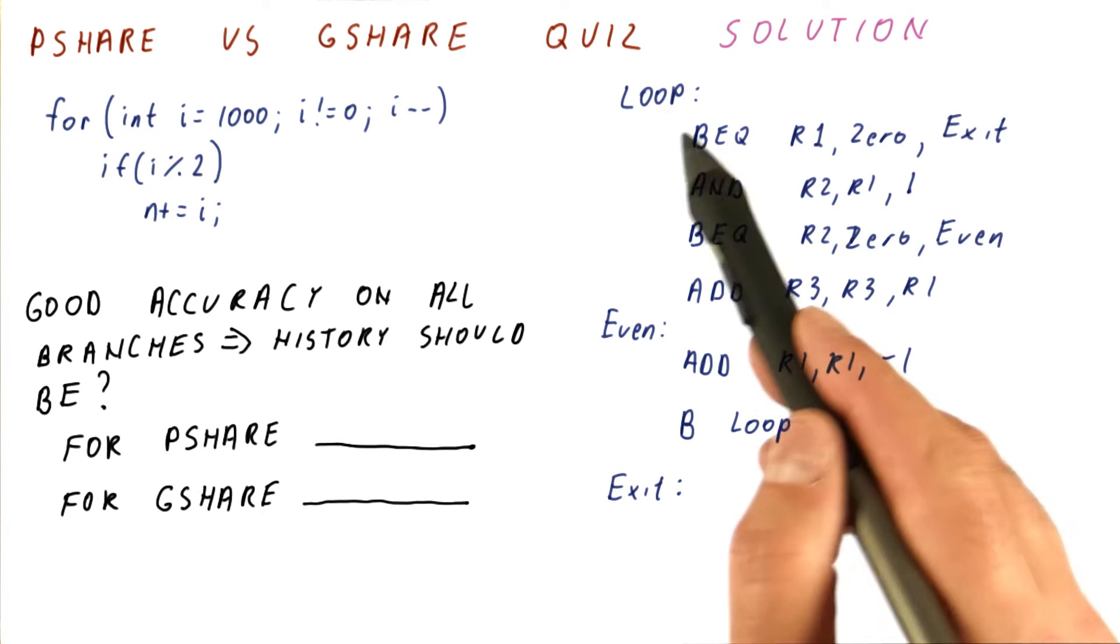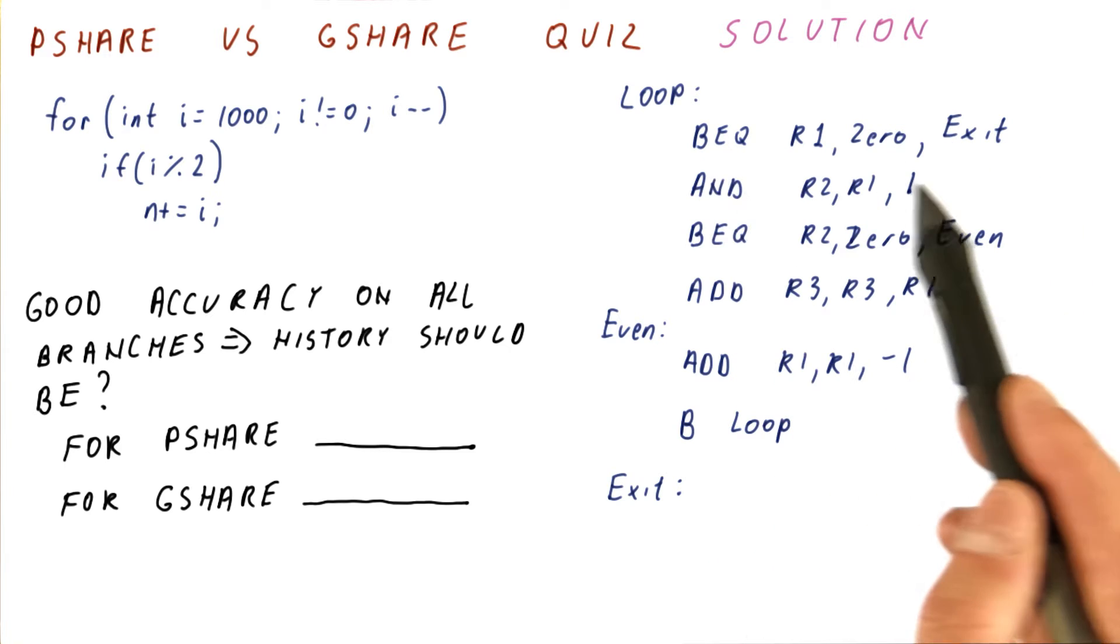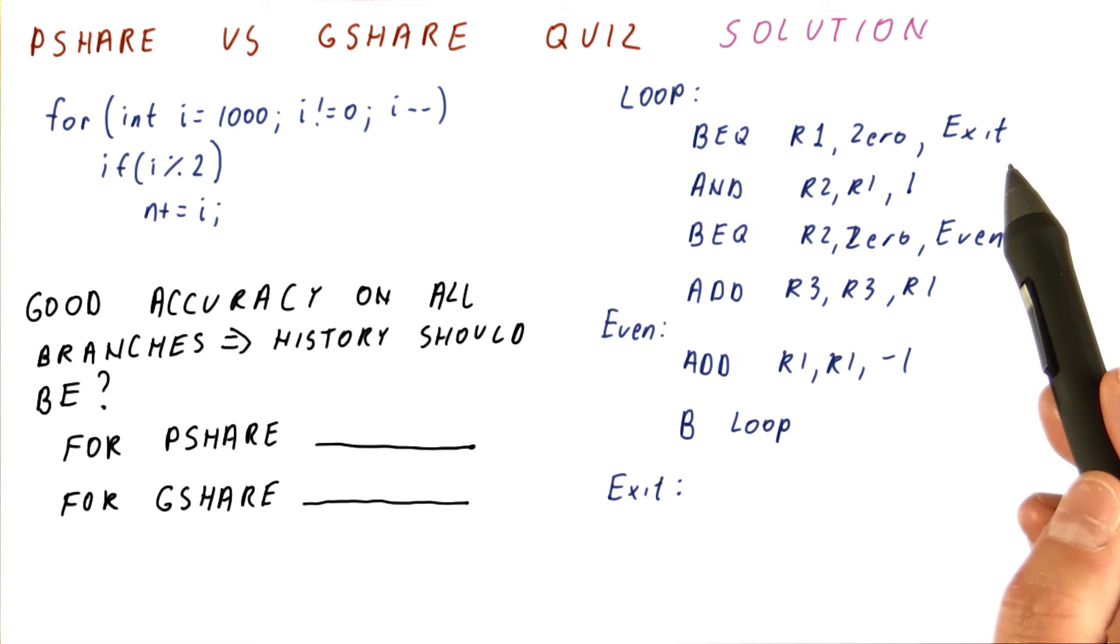Even with no history, using just a two-bit counter, we would predict this branch accurately a thousand times, followed by one misprediction, so it's a very good prediction rate still.